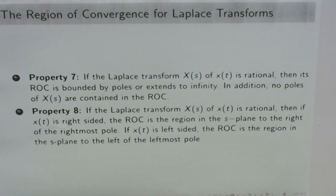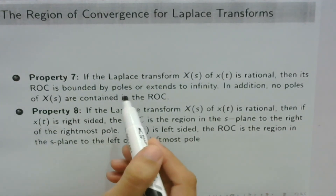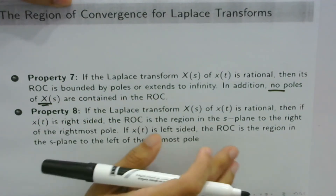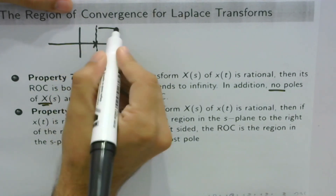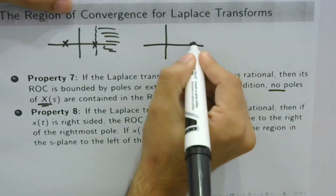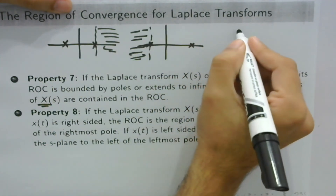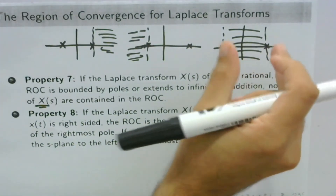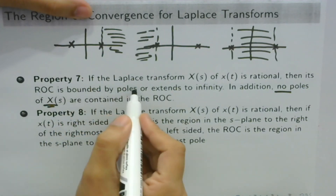Property 7 states that if the Laplace transform X(s) is rational, its ROC is bounded by poles or extends to infinity, and no poles are contained in the ROC. In the S-plane, with one or two poles, the ROC could extend to the right (right-sided), to the left (left-sided), or form a strip (two-sided signal), but is always bounded by poles.